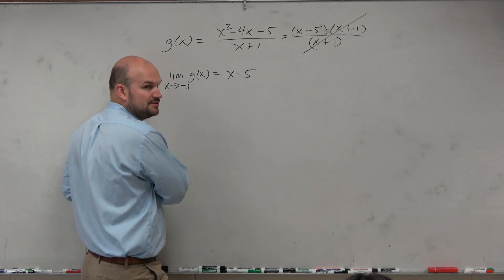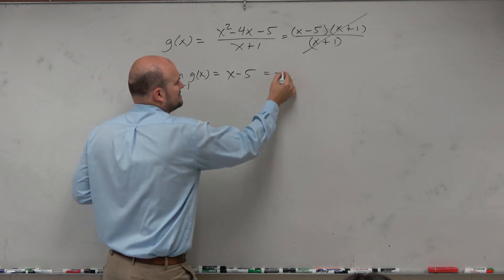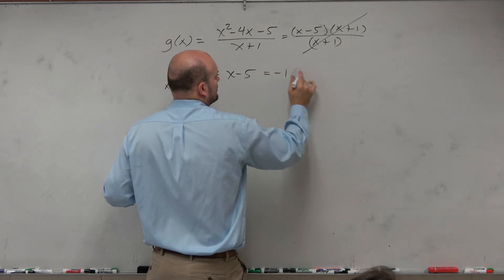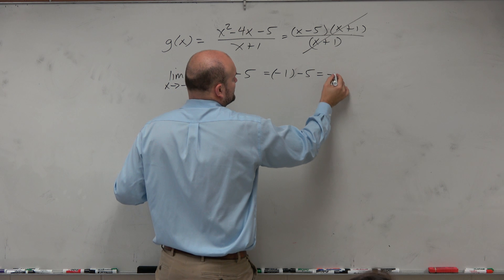Now, can I have direct substitution? Yeah, this isn't that bad. Negative 1 minus 5 equals negative 6.